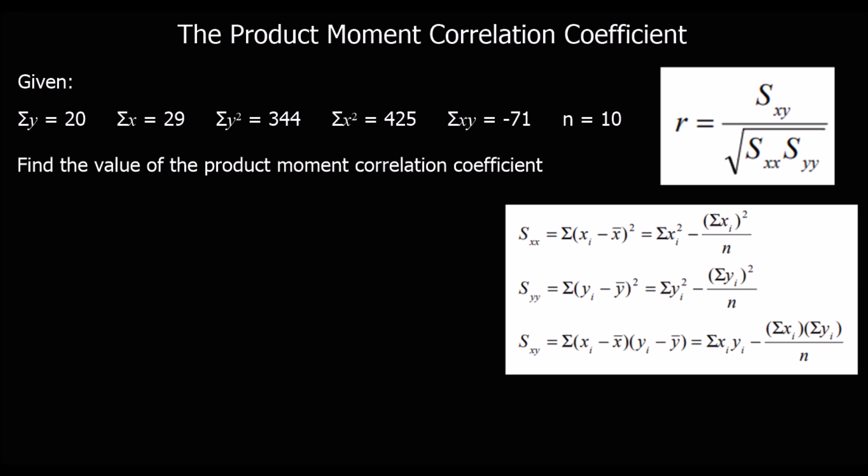In this video we're going to look at the product moment correlation coefficient. It is a measure of the correlation of two variables — specifically, the strength of correlation. It can go between minus one and plus one, with negative one being a perfect negative correlation, plus one being a perfect positive correlation, and zero being no correlation at all.